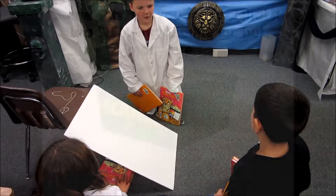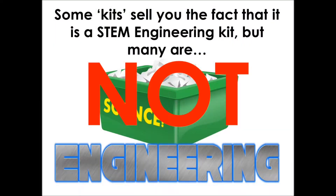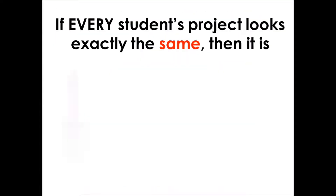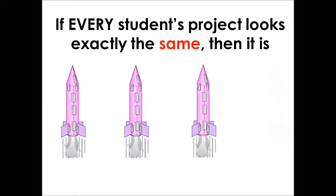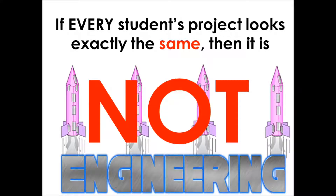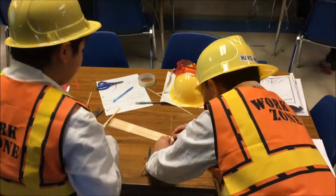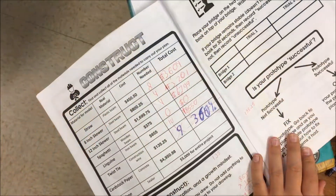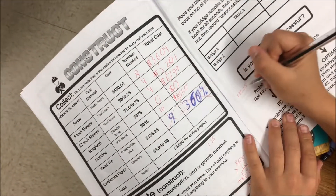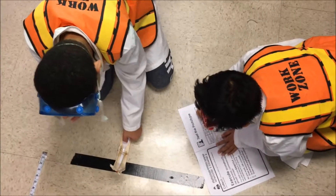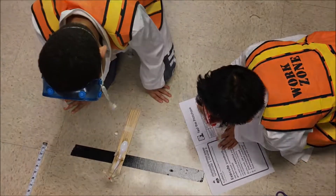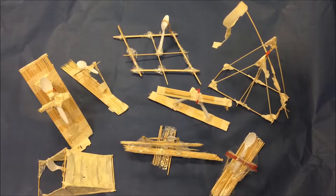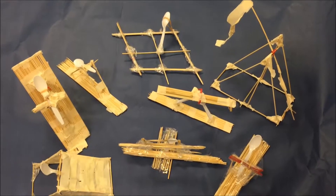Some of the engineering projects that come from kits are actually not engineering projects. If a project asks students to follow a series of directions step by step and all the end products look the same, that is not an engineering project. True engineering projects give students a guide to the engineering process, but the students decide how to use the materials and which designs to create. Therefore, at the end, all of the products look different — and of course they should, because they were designed by different engineers.